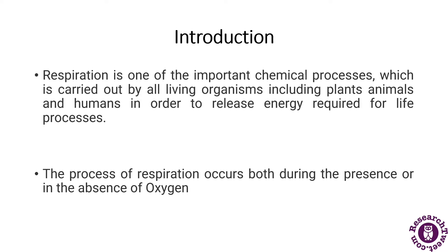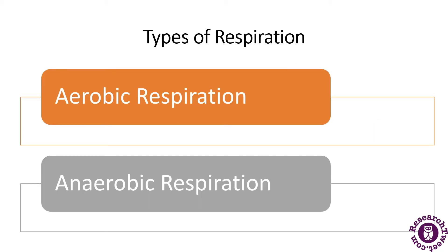Plants also undergo the process of respiration. There are two types of respiration: aerobic respiration and anaerobic respiration. Aerobic respiration is a cellular respiration that takes place in the presence of oxygen. In aerobic respiration, oxygen gas is used to produce energy from food. This type of respiration is common in most plants, animals, birds, humans, and other mammals.